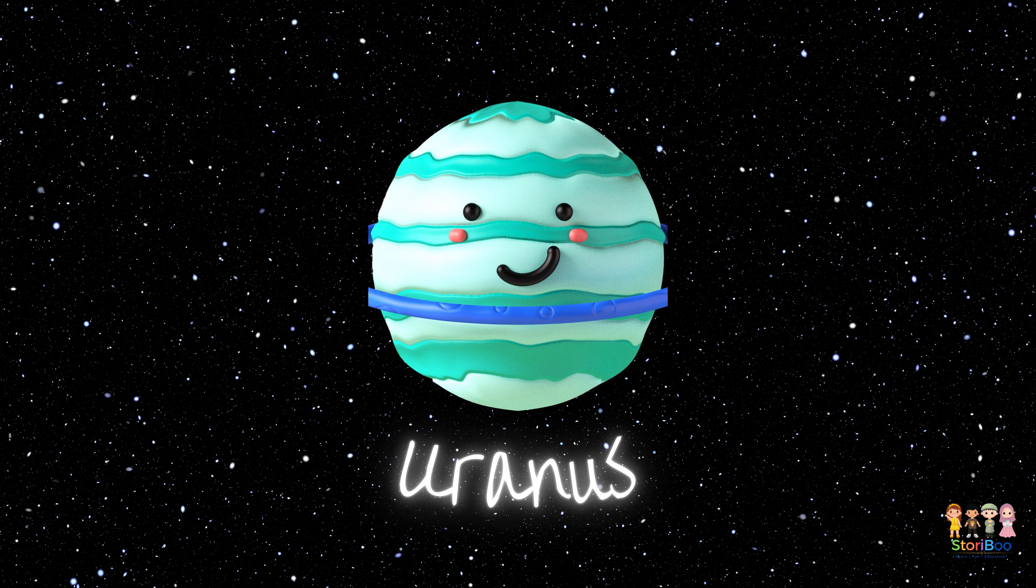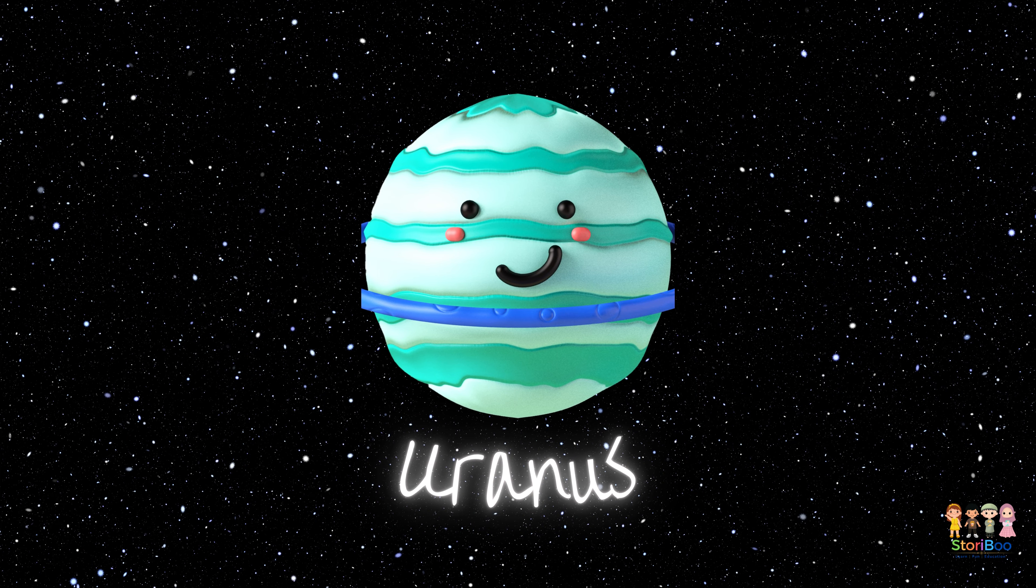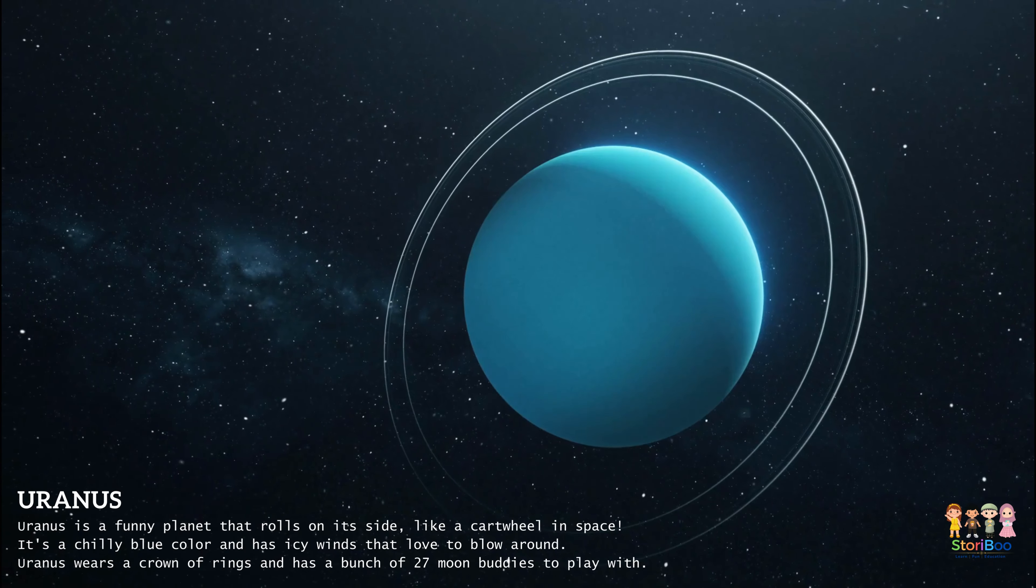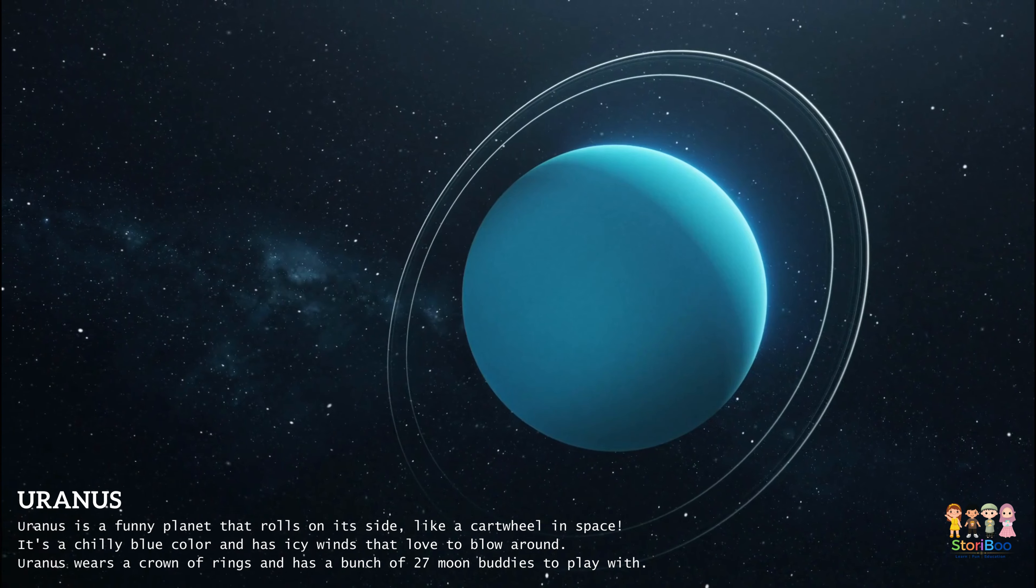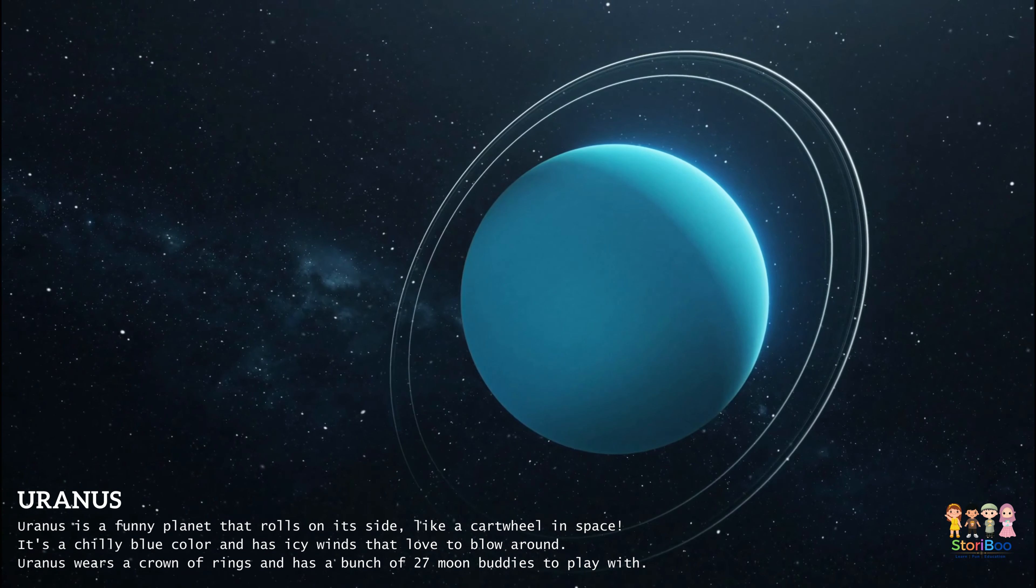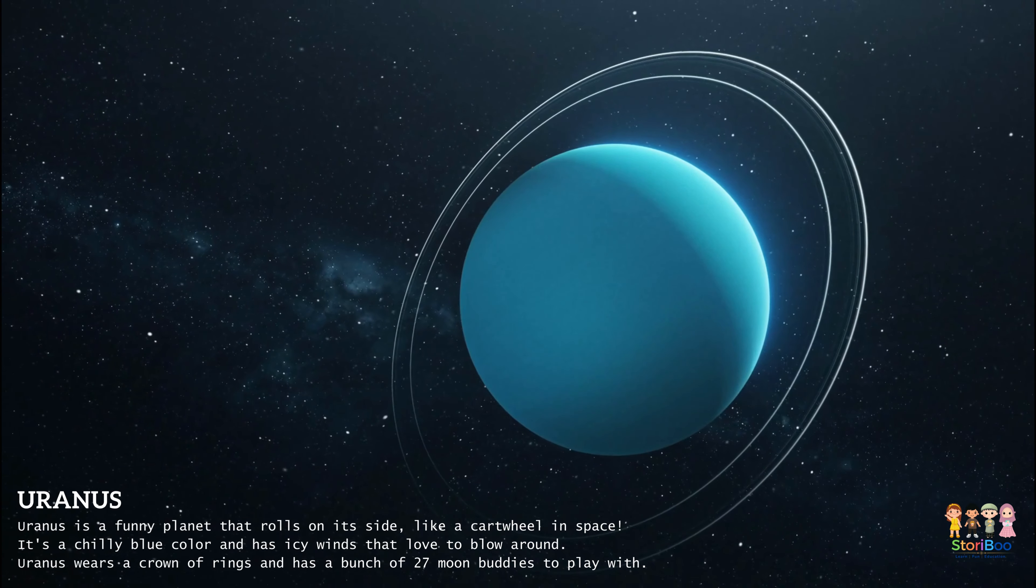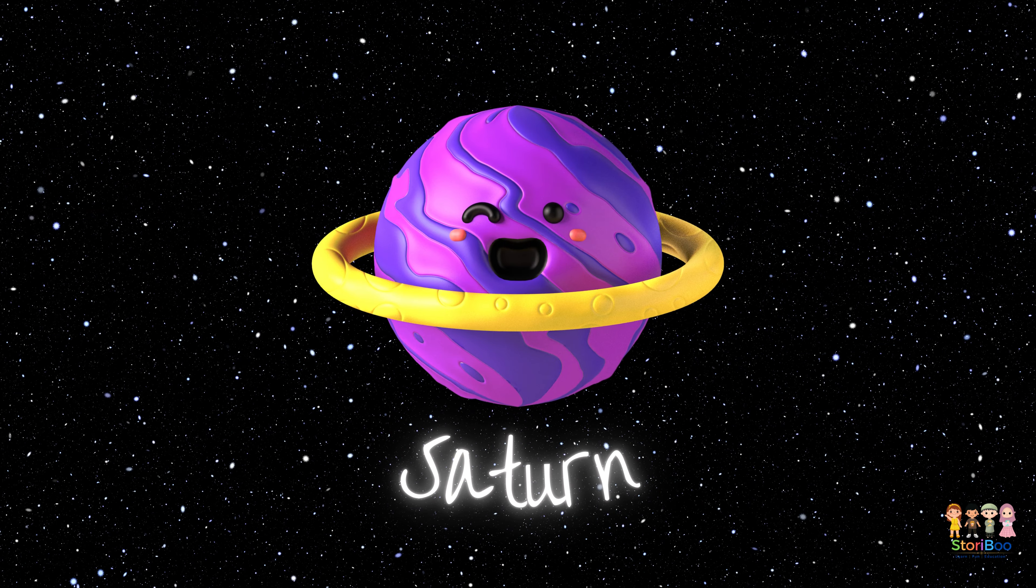Uranus is a funny planet that rolls on its side like a cartwheel in space. It's a chilly blue color and has icy winds that love to blow around. Uranus wears a crown of rings and has a bunch of 27 moon buddies to play with.